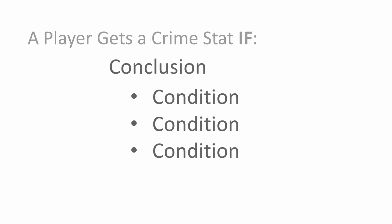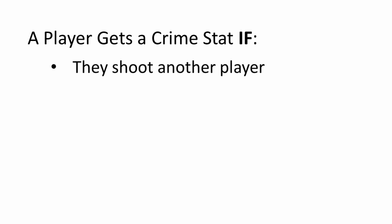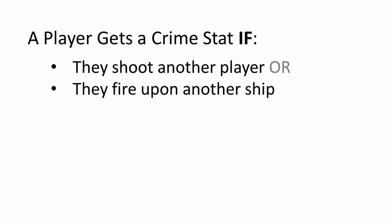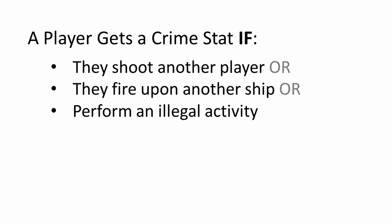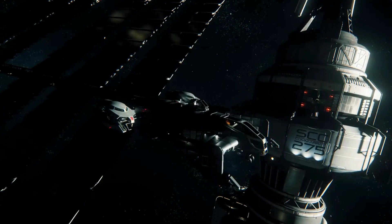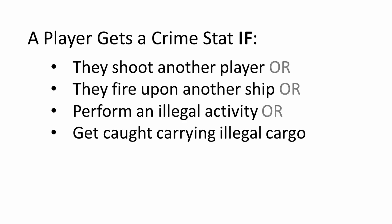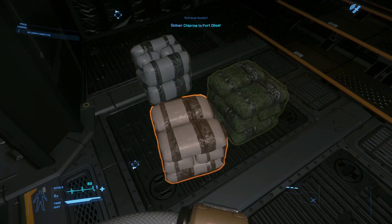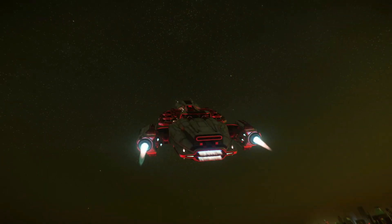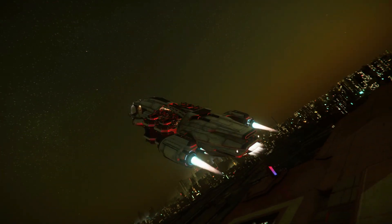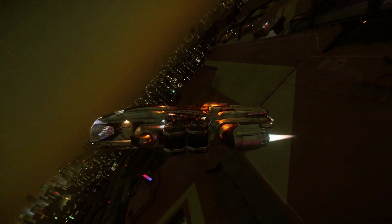Let's say we want to know when a player gets a crime stat. The conditions that may drive that conclusion are things like: did they shoot another player with a weapon? Did they fire upon another player's ship? Did they perform an illegal activity like turning off a comm array? Were they caught carrying illegal cargo? There's a host of other things you can do that are considered criminal activity in the game, but we'll just start with this for our example.